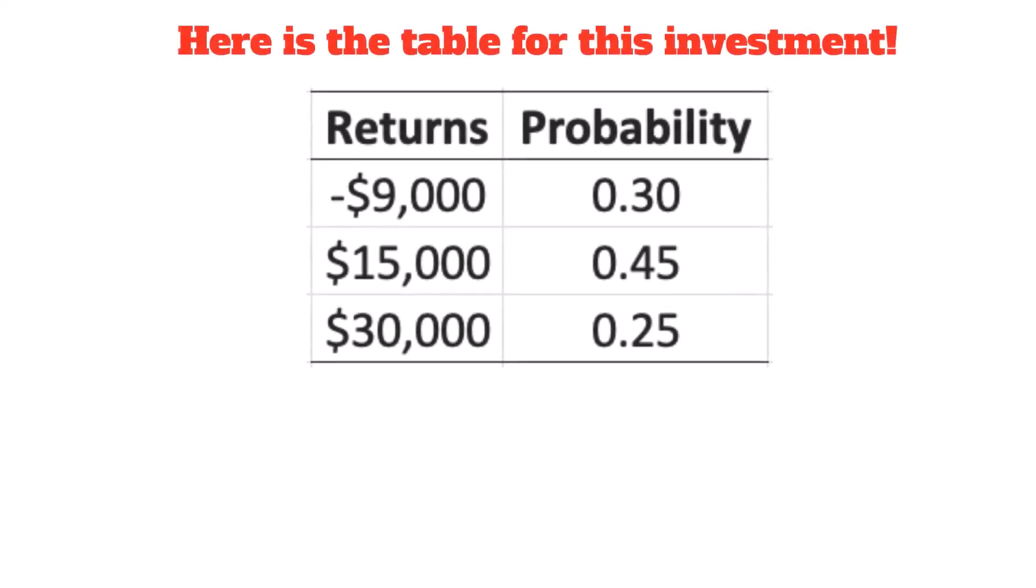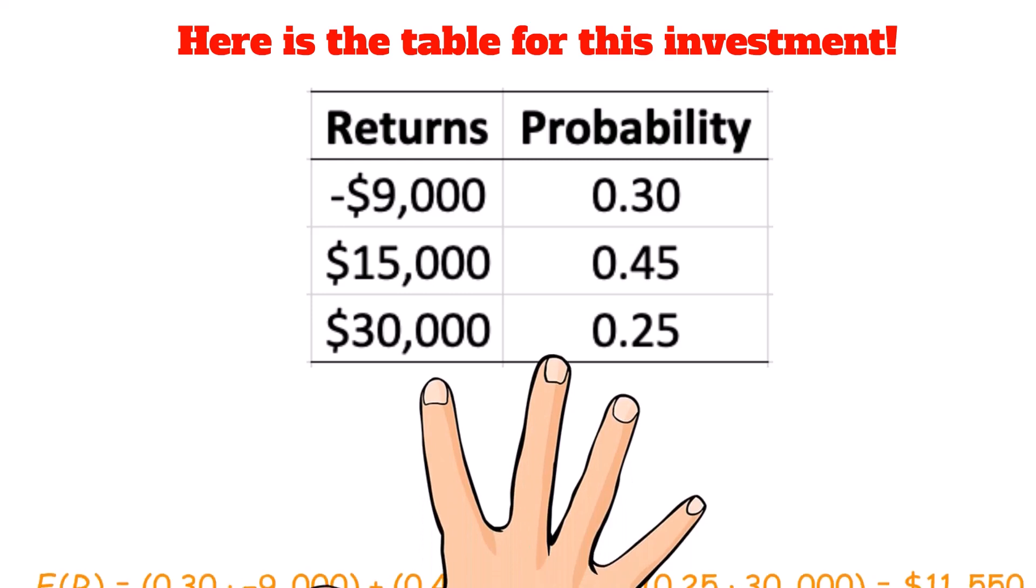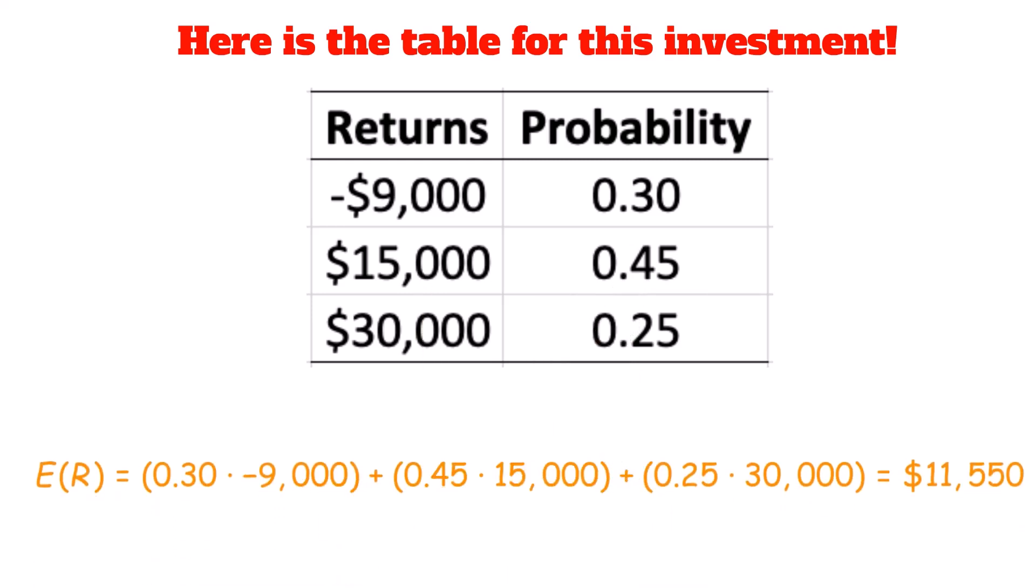Here's a table for this investment. A loss of $9,000 happens with a 0.3 probability. A gain of $15,000 happens with a 0.45 probability. The expected value of this occurring is equal to, applying our formula from before, 0.3 times -9,000 plus 0.45 times 15,000 plus 0.25 times 30,000. When we simplify this, we get an expected gain of $11,550.